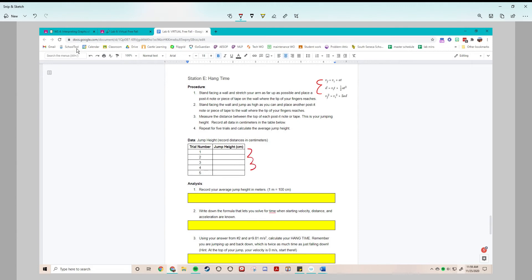Do your five trials. Say you get like 30 centimeters on average with your jump height. In meters that would be 0.30 meters, so you're just dividing by 100 for that.